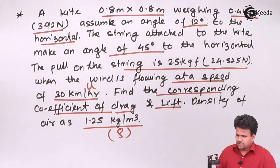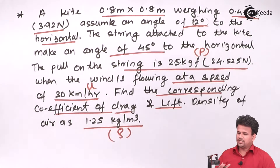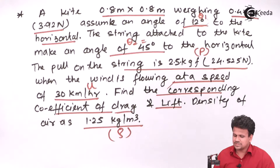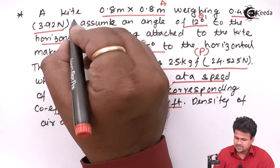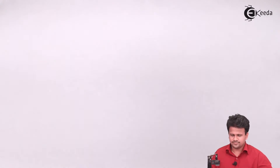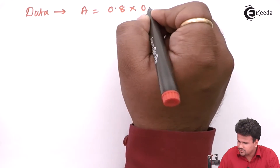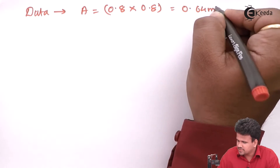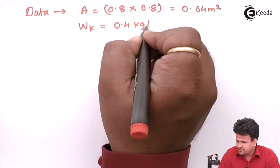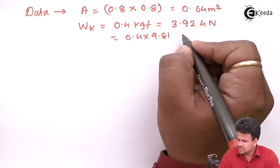Let us write down what is given to us. The area of the kite is 0.8 by 0.8 meters, which is 0.64 meter square. The weight of the kite is 0.4 kgf, that is 0.4 into 9.81, which gives us 3.924 Newtons. The weight of the kite always acts in the downward direction.